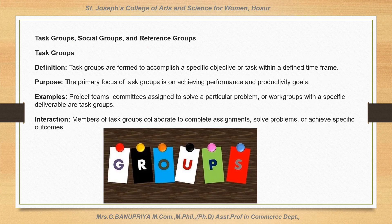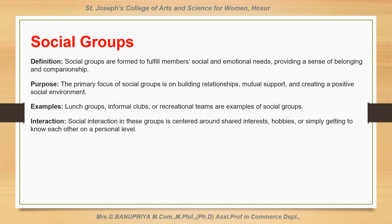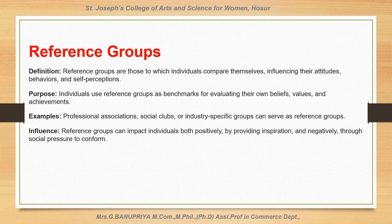Task groups are primarily focused on achieving performance and productivity goals. Examples of task groups include project team committees assigned to solve a particular problem. Social groups: the primary focus of a social group is on building relationships, mutual support and creating a positive social environment. Examples of social groups include lunch groups, informal clubs and recreational teams. Reference groups: individuals use reference groups as benchmarks for evaluating their own beliefs, values and achievements. Professional associations, social clubs and industry-specific groups can serve as reference groups.